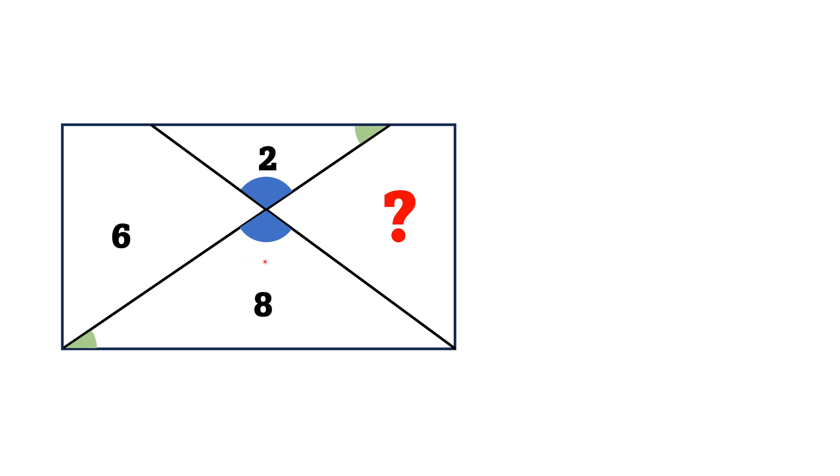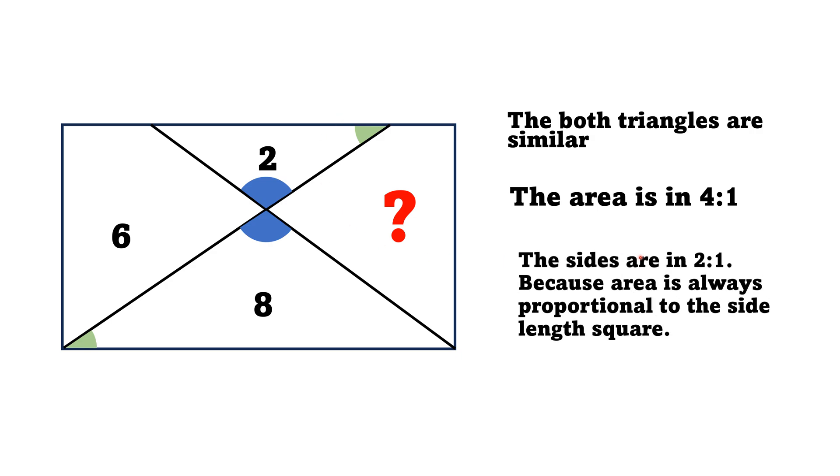So by angle-angle similarity, these two triangles are similar. Moreover, the area is in ratio 4:1, and thus the sides are in ratio 2:1, because area is always proportional to the side length squared. So let's consider that this length is x, so this length, which is also the length of the rectangle, will be 2x.